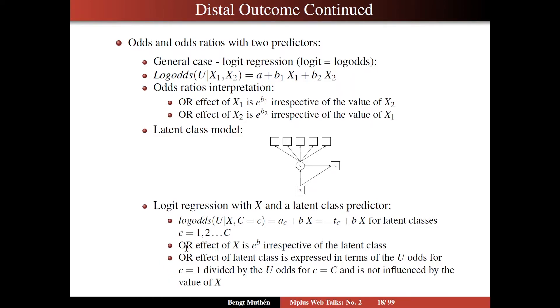The odds ratio effect of X is e to the power of B, irrespective of the latent class, by virtue of using logistic regression. The odds ratio effect of the latent class variable C, the other predictor of U, is expressed in terms of the U odds for C equals 1, the first class, divided by the U odds for C equals C, the last class.